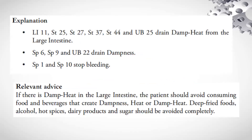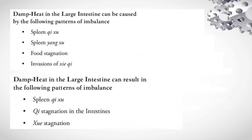LI11, Stomach 25, Stomach 27, Stomach 37, Stomach 44, and Bladder 25 drain damp heat from the large intestine. Spleen 6, Spleen 9, and Bladder 22 drain dampness. Spleen 1 and Spleen 10 stop bleeding. If there is damp heat in the large intestine, the patient should avoid consuming food and beverages that create dampness, heat, or damp heat. Deep fried foods, alcohol, hot spices, dairy products, and sugar should be avoided completely. Damp heat in the large intestine can be caused by spleen qi deficiency, spleen yang deficiency, food stagnation, and invasions of pathogenic qi. Damp heat in the large intestine can result in spleen qi deficiency, qi stagnation in the intestines, and blood stagnation.